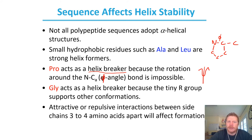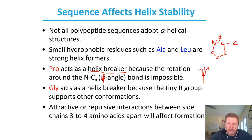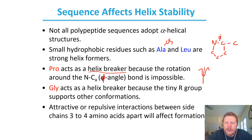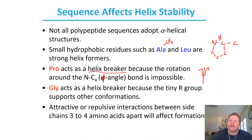Attractive or repulsive interactions between side chains of three to four amino acids will also influence the formation of an alpha helix. This data from a paper investigated the change in free energy based on the introduction of an amino acid into a peptide that generally forms an alpha helix. They had an alanine and mutated it, seeing no change for alanine-to-alanine, but an increase in free energy as they changed to different residues.